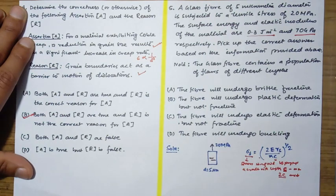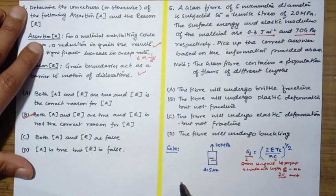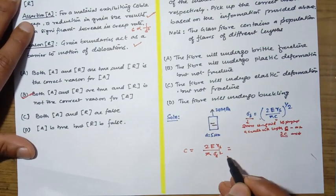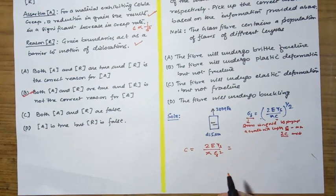First of all to check what is the crack length at which this 20 MPa of stress is going to propagate the crack, so let us find this. If you find from this equation, c will be 2E gamma_s by pi sigma_f square. Now if you calculate this, which I have calculated, so let me write this one, this will come around 33.4 into 10 power minus 6 meter.